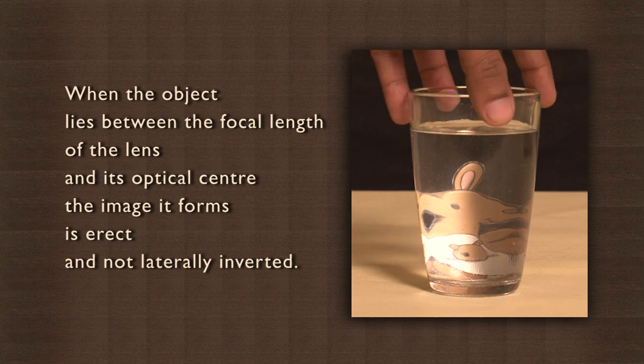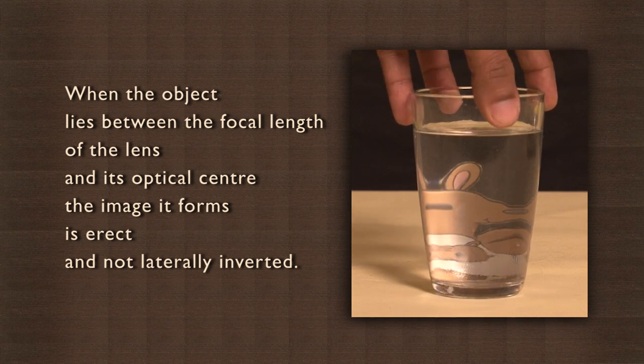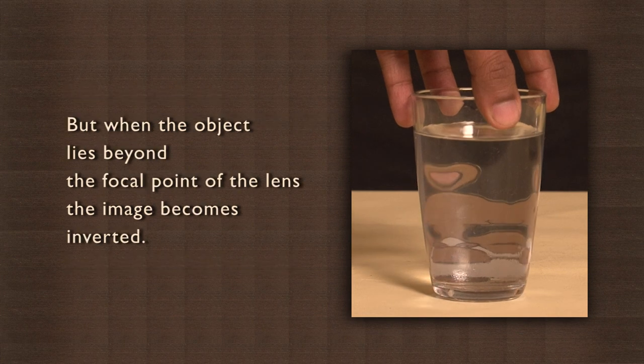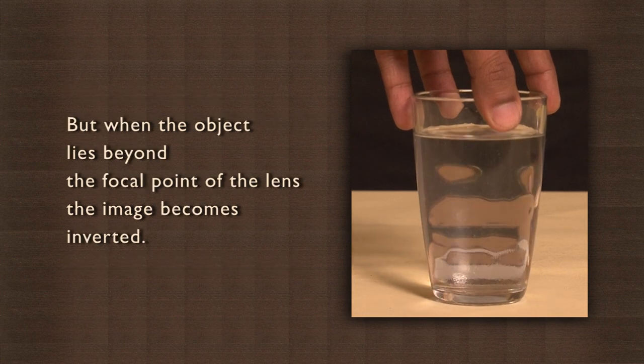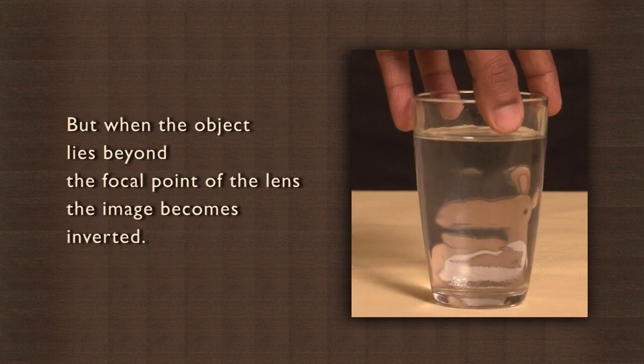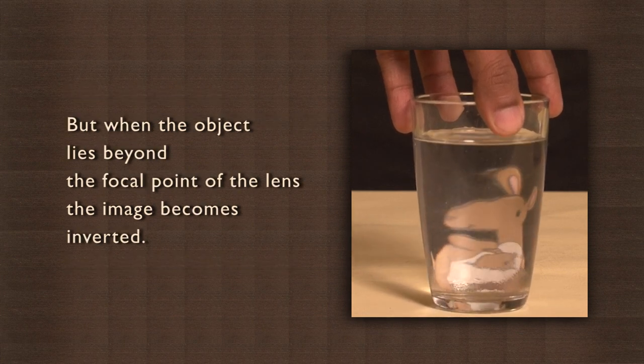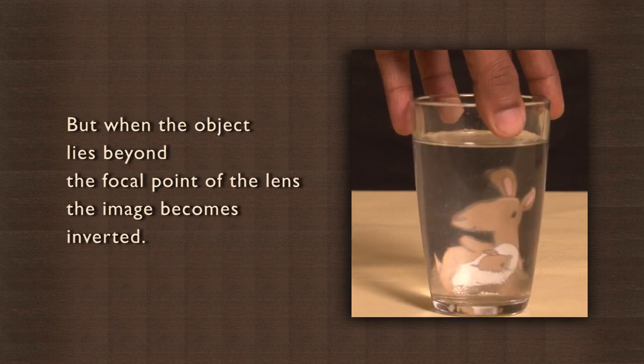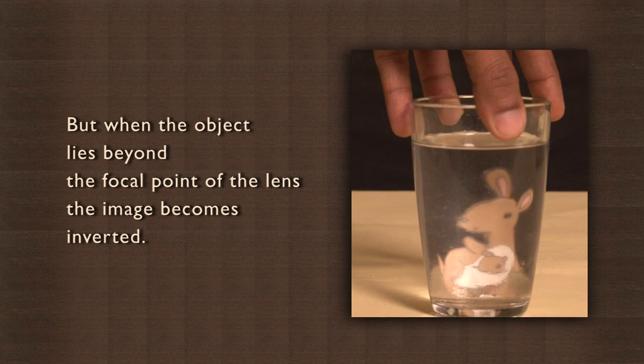So the kangaroo's face will appear as it is. But when the object lies beyond the focal point of the lens, the image becomes inverted, as shown here.